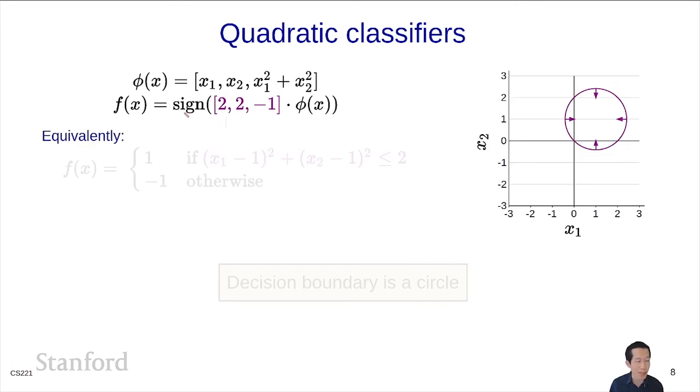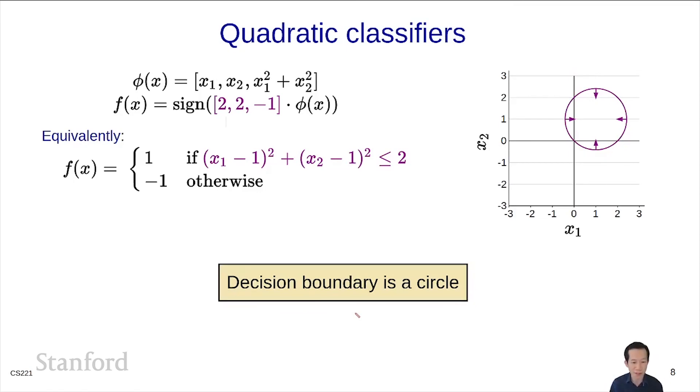There's some algebra that you can do, which I'm going to skip over. But you can rewrite this expression as follows. So f(x) is equal to 1 if this quadratic form is less than 2. You might remember from algebra or trigonometry that this is the square distance of a point to the point (1, 1). In particular, if I constrain the square distance to be less than or equal to 2, then this is the region of points within radius √2 of a circle centered at (1, 1), which is exactly what this is. Everything else is classified as -1. So the decision boundary we got successfully is a circle.